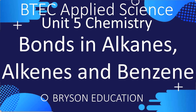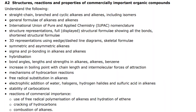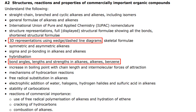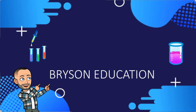Hello there, welcome to my channel on chemistry lessons. This is BTEC Applied Science Unit 5 chemistry, and we're going to look at the bonds in alkanes, alkenes, and benzene. Looking at the specification, we're going to be covering bond angles, bond lengths, and bond strengths in alkanes, alkenes, and benzene, and we're also going to introduce the idea of 3D representation using wedge and dashed lines.